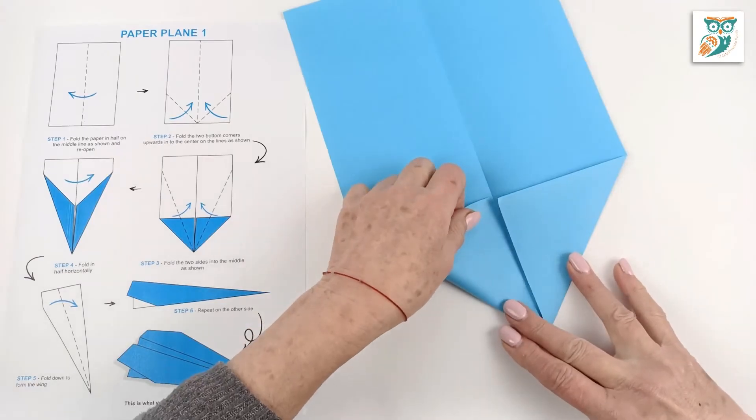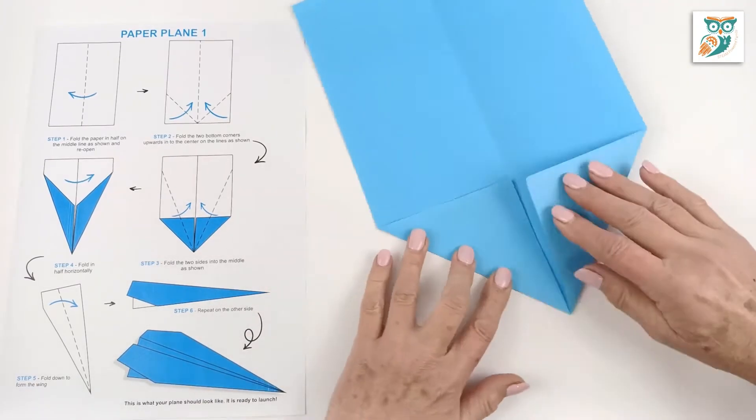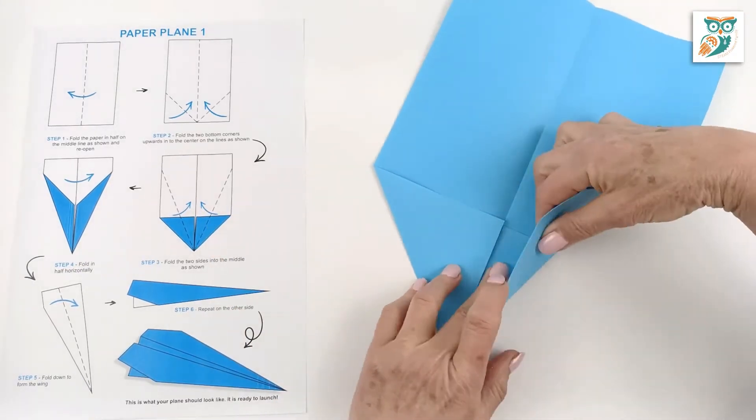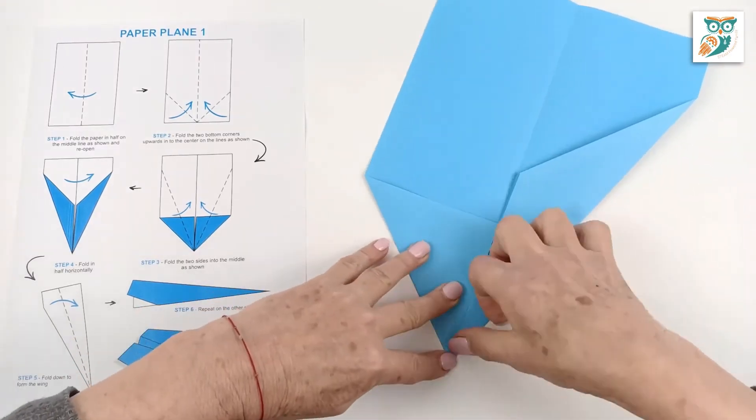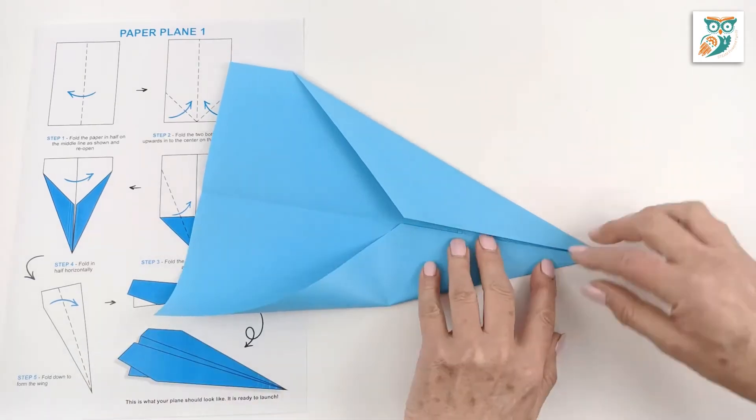You want to make sure you get really nice crisp edges whenever you're making paper airplanes. Those crisp edges help it fly more smoothly and reduce drag. Now grab each side and fold it in to the center line here to create a really nice sharp point. You want it really aerodynamic.